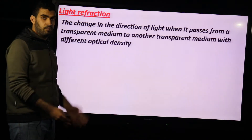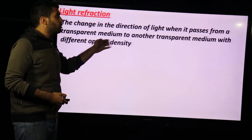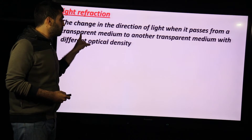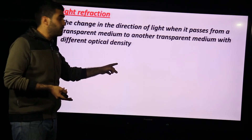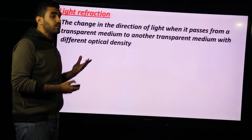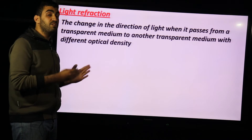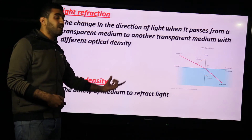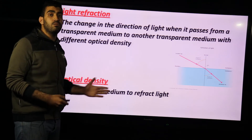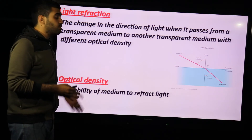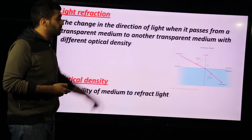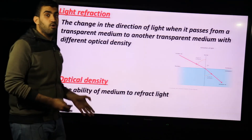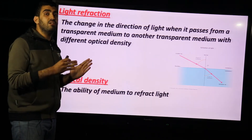Light refraction is the second phenomenon: the change in the direction of light when it passes from one transparent medium to another. For example, when light moves through air then through water, it changes its direction — give reason: because air and water have different optical densities. Optical density is the ability of a medium to refract light. The incident light ray changes direction slightly when moving from air to water.